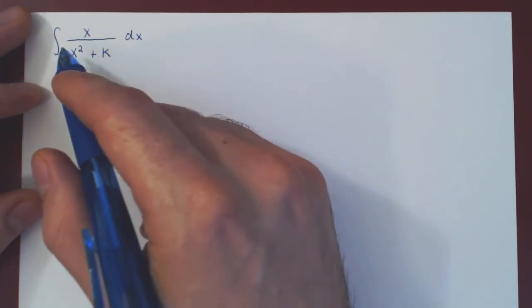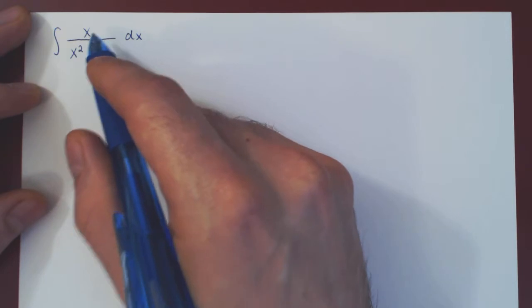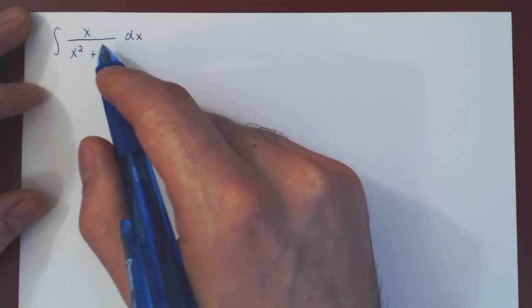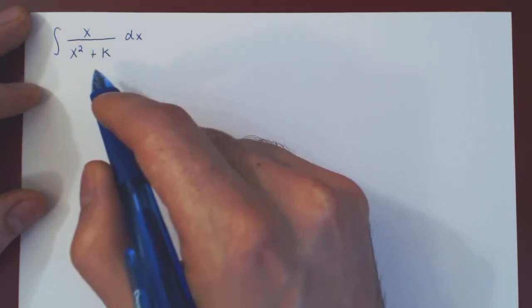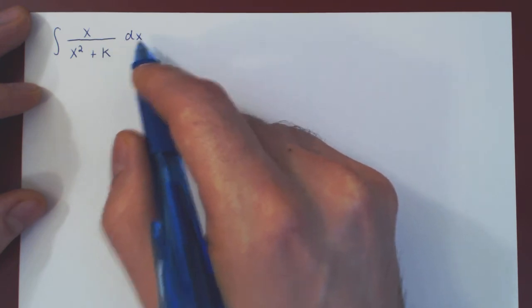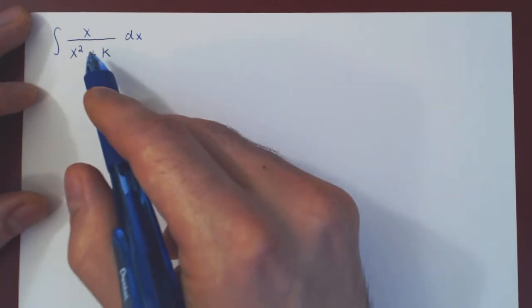And so here if you look, we are looking at the integral of x over x squared plus k, where k is a constant, and we integrate of course with respect to x here.